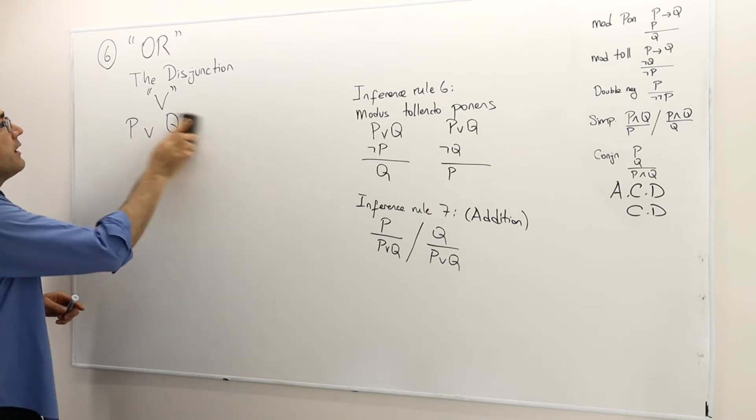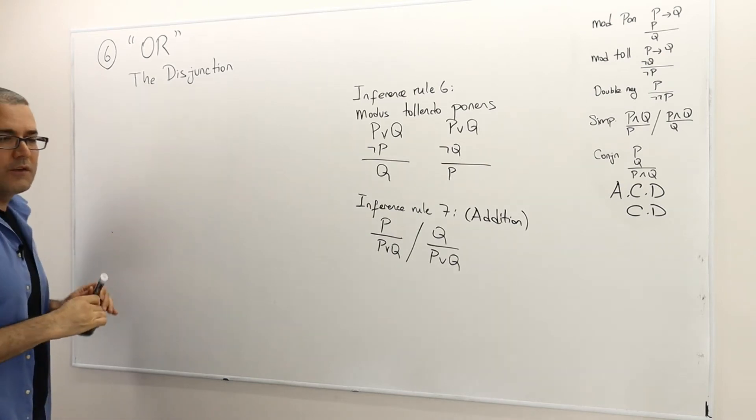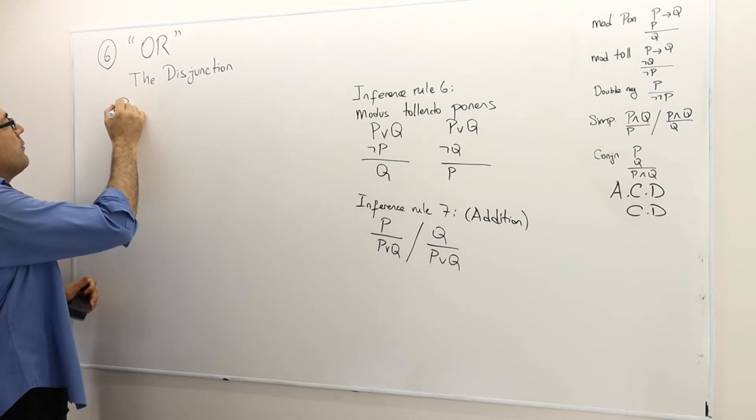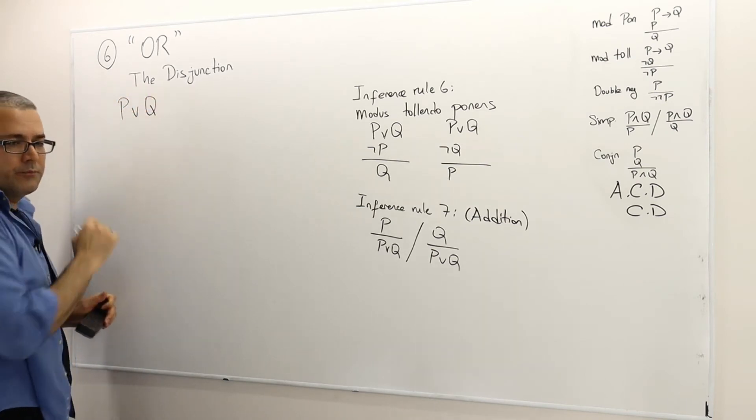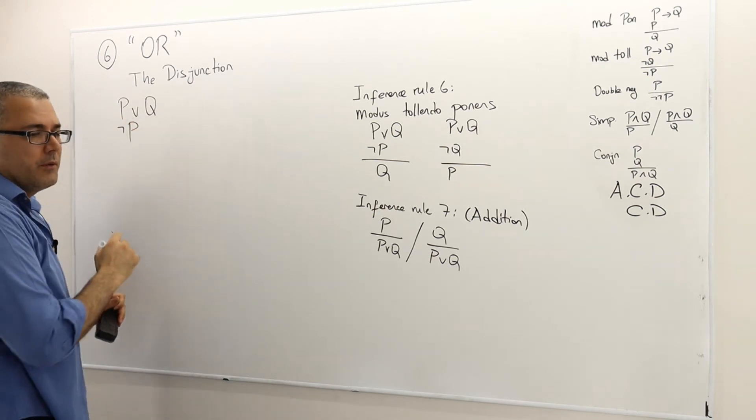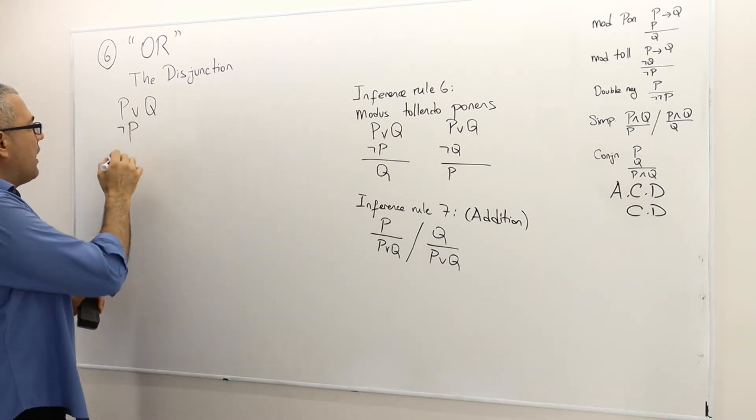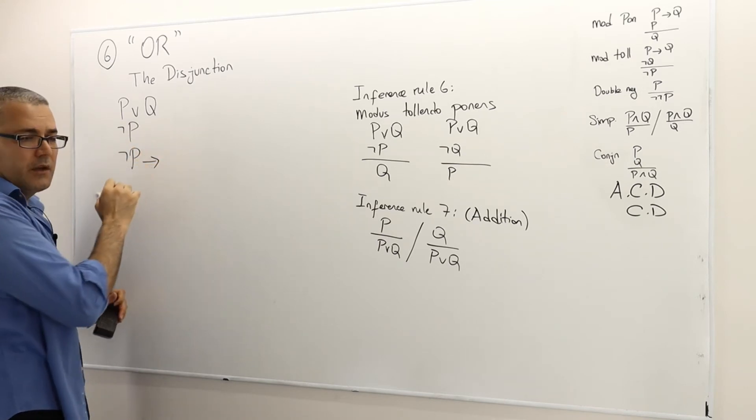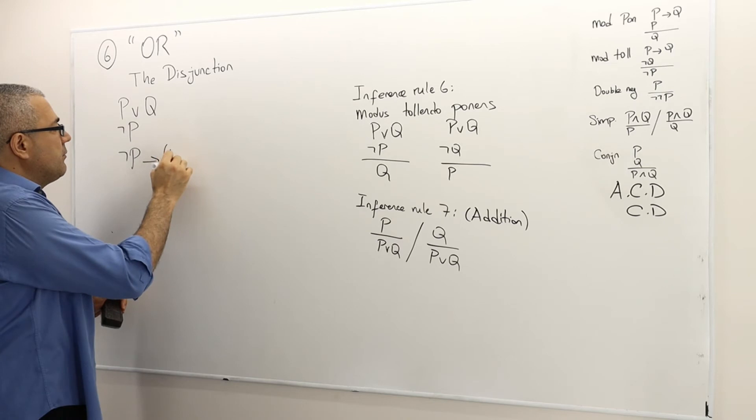Here is the statement. Premise number one is P or Q. Premise number two is not P, so P must be false. And then premise number three is not P implies Q implies R.